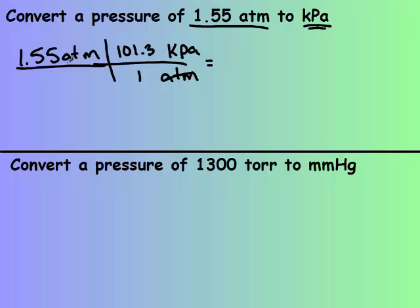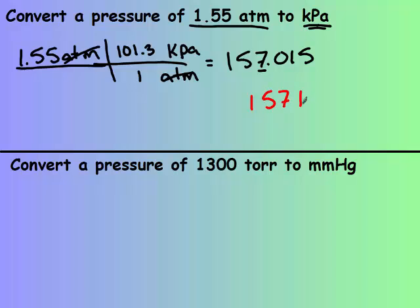I simply have to multiply to get my answer, but make sure that you check your sig figs. I start with three sig figs — one, two, three — and my final answer is 157 kPa.